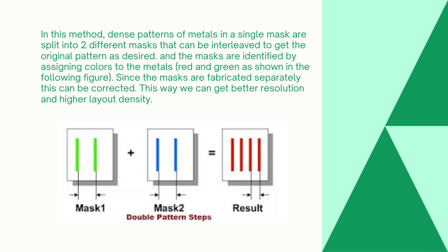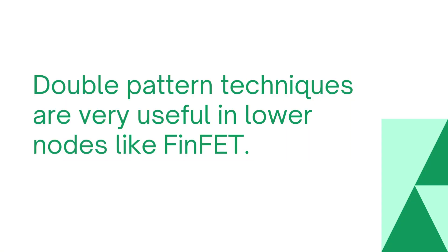What is the advantage of double patterning? If we are using a normal single pattern, the minimum metal-to-metal distance might be one micrometer. But with double patterning we can achieve 0.5 micrometers. So with double patterning we can get double the pitch density of the layout. This is the simple answer you can give for the double patterning advantage.